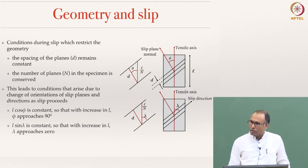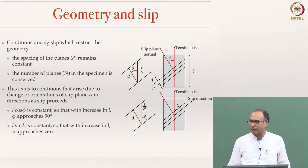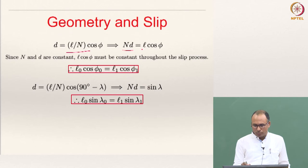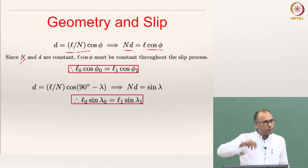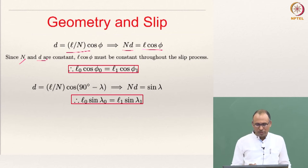Similarly, you can write a relation between D and λ: D equals L by N cos(90 minus λ). From that you can show that N times D equals L cos φ. Since N is the number of planes and must remain constant, and interplanar spacing must remain constant, L cos φ should be constant.